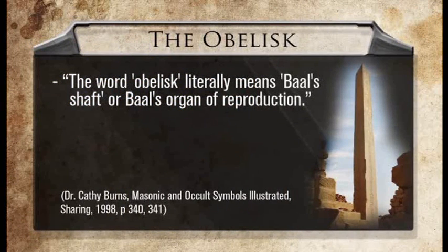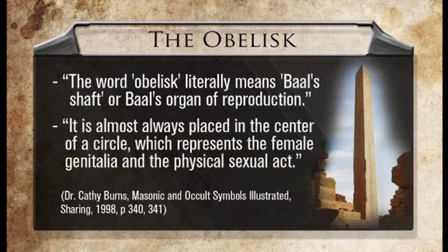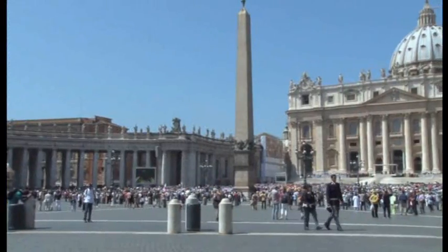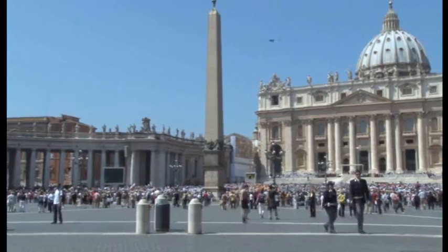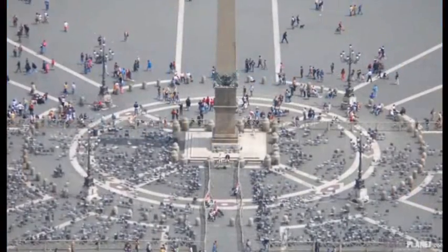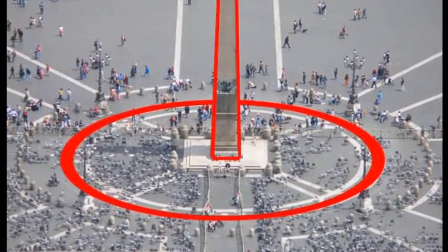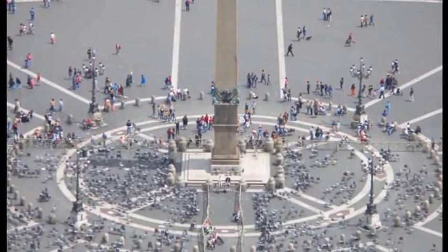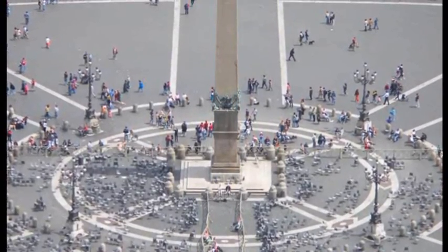The word obelisk literally means Baal's shaft or Baal's organ of reproduction. It's almost always placed in the center of a circle — the solar wheel — which represents the female genitalia and the physical sexual act. This is why the solar wheel and the obelisk work together in tandem. This is why you see the solar wheel in Vatican Square, St. Peter's Square, and the obelisk running right through the hub of that wheel — representing the consummation of the sexual act between the sun god and his wife Semiramis, or Ishtar, or as we pronounce it in English, Easter.